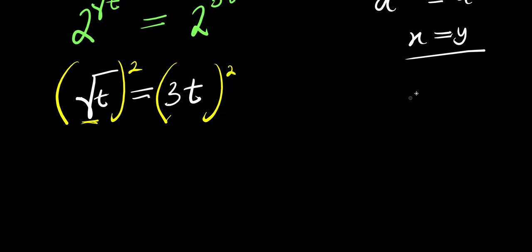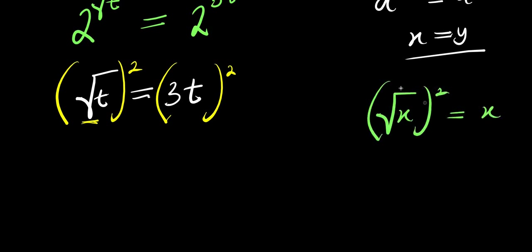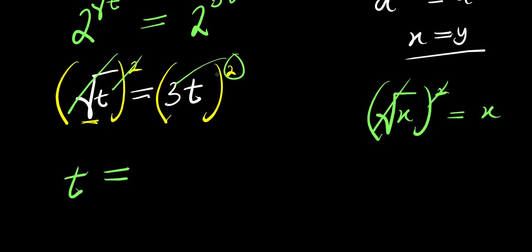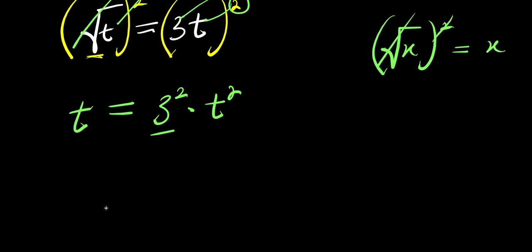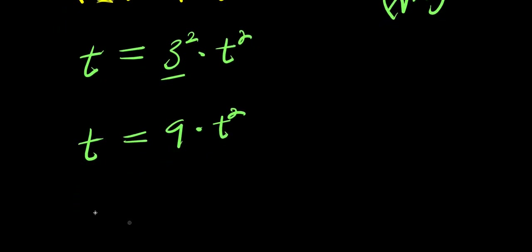If you have square root of x raised to the power of 2, this equals x, because squaring eliminates the square root. So squaring square root of t gives t, and squaring 3t: we distribute the square to each factor, so 3 squared is 9 and t squared is t². I have t equals 9t².